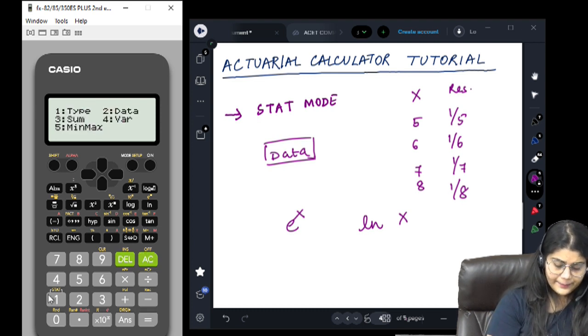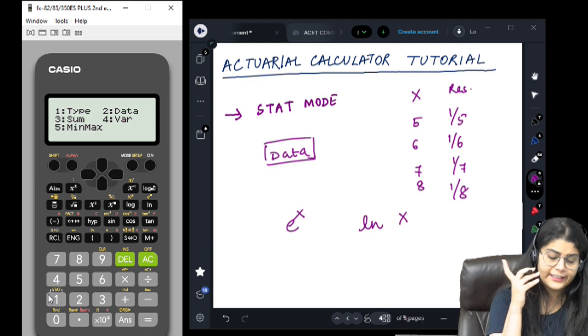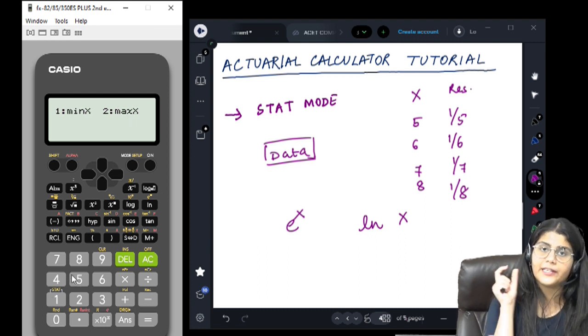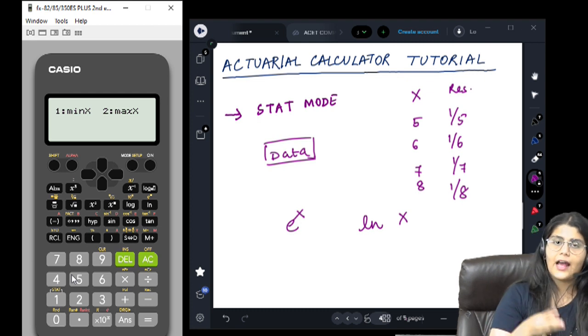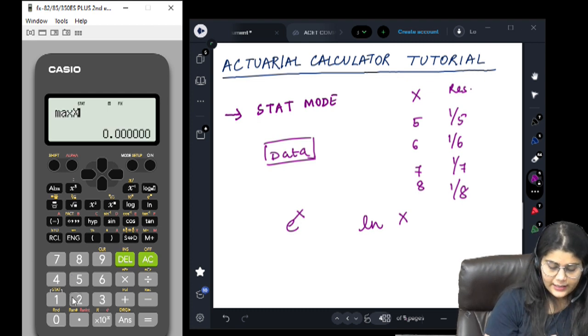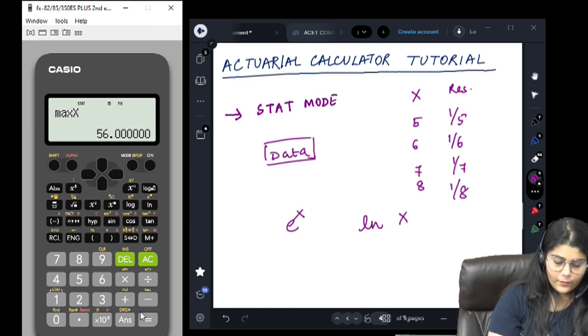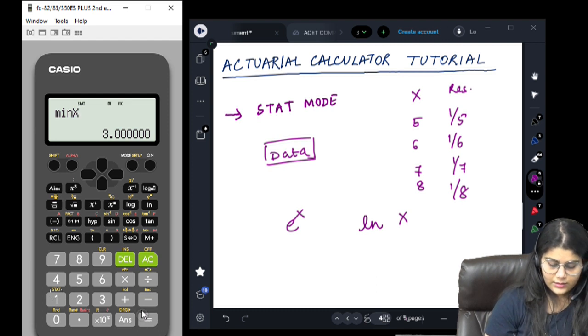Finally, the fifth option is min max. Over here, you can find out the minimum value in your data set and the maximum value in your data set. What was our maximum? Our maximum was 56. What about the minimum? Minimum was 3.